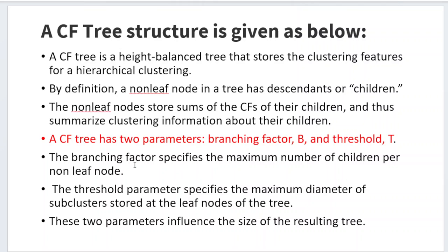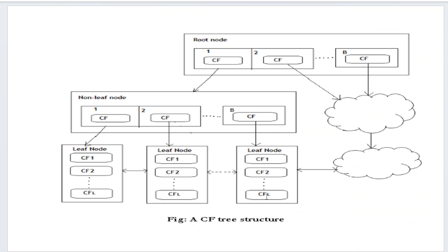The branching factor b specifies the maximum number of children per non-leaf node — that is, how many children a particular node can have. The threshold parameter t specifies the maximum diameter of the sub-clusters stored at the leaf nodes of the tree. The cluster feature tree is completely based upon these two parameters: branching factor b and threshold parameter t.